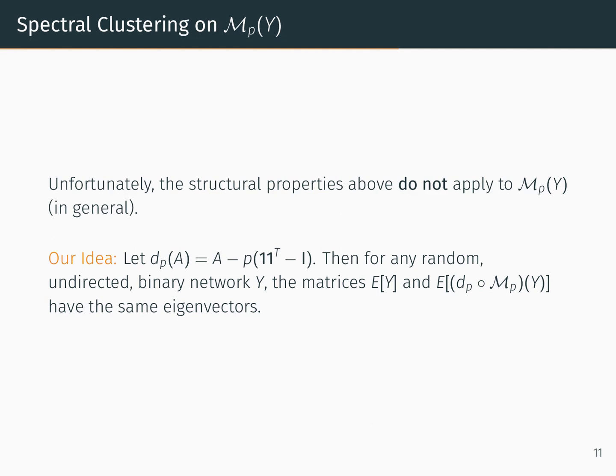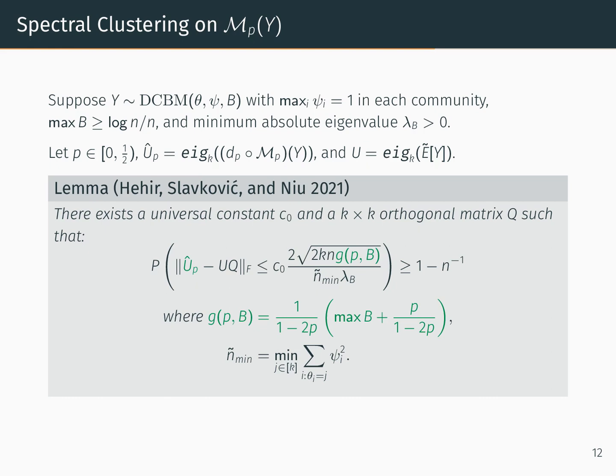So here's an idea. Let dp be this function that takes an adjacency matrix and subtracts p from every element off the diagonal. Then, for any random undirected binary network y, the expectation of the adjacency matrix of y and the adjacency matrix of dp applied to the synthetic network have the same eigenvectors. This idea leads to an important lemma. Take y to be a DCBM satisfying appropriate properties, and let p be some value less than 1/2 but possibly zero, so that mp(y) is the synthetic network if p > 0 but it's the true network if p = 0. Take û_p from the leading k eigenvectors of dp applied to mp(y), and take u from the leading eigenvectors of Ẽ(y) as described earlier. Then with reasonably high probability we can say that û_p concentrates around u.